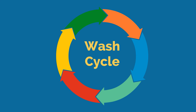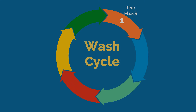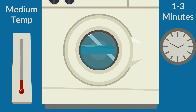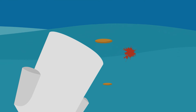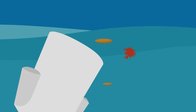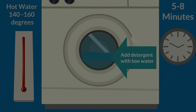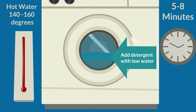Six-step wash process. The first step in the wash process is the flush, in which the items are flushed with a high water level at medium temperature for one to three minutes. The second wash step is the suds. The detergent acts as a surfactant, loosening and lifting the soil and enhancing the water's ability to penetrate the material. Add detergent with a low water level, with hot water of at least 140 to 160 degrees, for five to eight minutes.